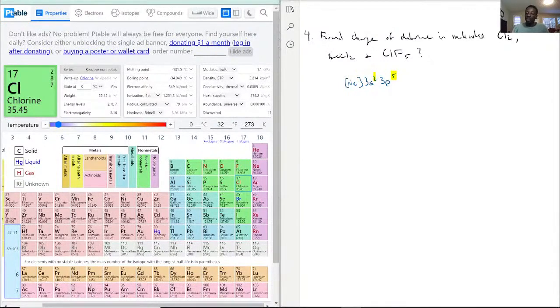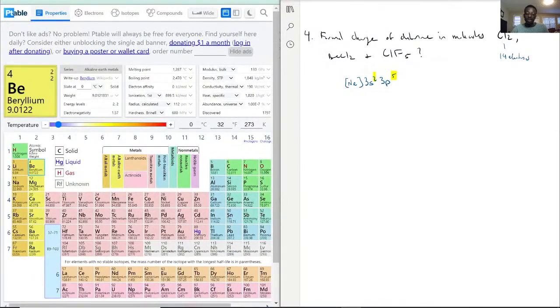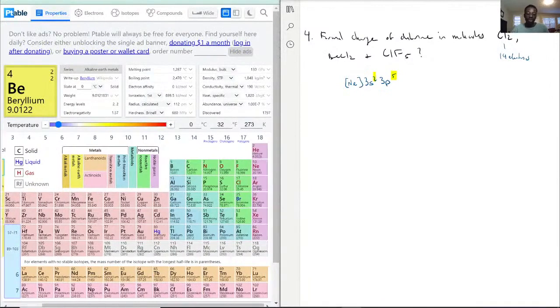This Cl2 here will be working with 14 electrons total. BeCl2 - beryllium is the second element on the second row. If we were to start with that noble gas notation as well, beryllium would start with helium, and then it'd just be 2s2. Beryllium only has 2 electrons it's working with. So we have Cl2, which is 14 plus 2. In total, we're working with 16 electrons for BeCl2.